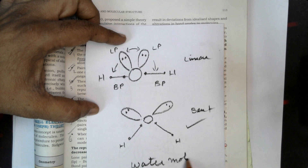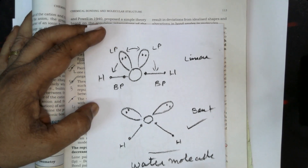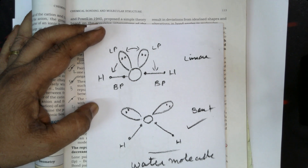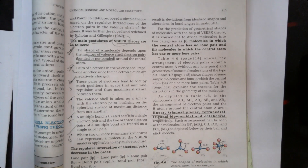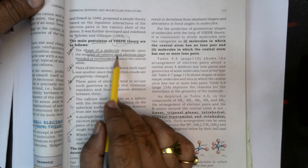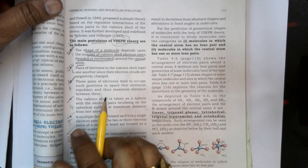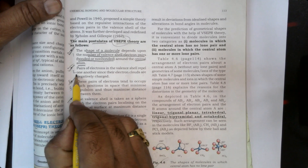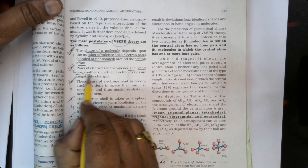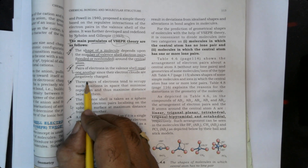So based on the valency shell electron pair repulsion theory, we can determine the structure of a molecule. The shape depends on the number of valency shell electron pairs — bonded and non-bonded — around the central atom. Second, the pairs of electrons in the valency shell repel one another, since the electron clouds are negatively charged, and negative-to-negative produces repulsion.